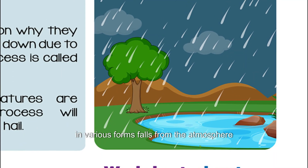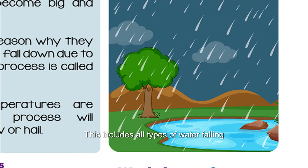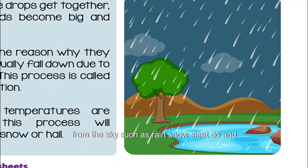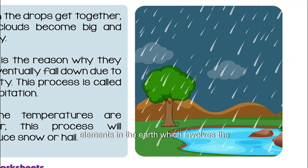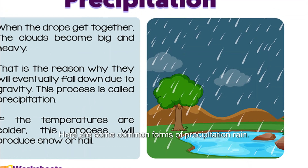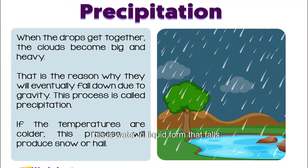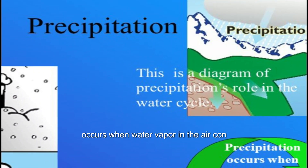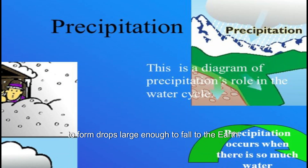Precipitation is the process in which water in various forms falls from the atmosphere to the Earth's surface. This includes all types of water falling from the sky, such as rain, snow, sleet, dew, and acid rain. Precipitation is one of the key elements in the Earth's hydrological cycle, which involves the movement and distribution of water on the planet. Rain is water in liquid form that falls from the sky in droplets. Rain usually occurs when water vapor in the air condenses into water droplets and then merges to form drops large enough to fall to the Earth.